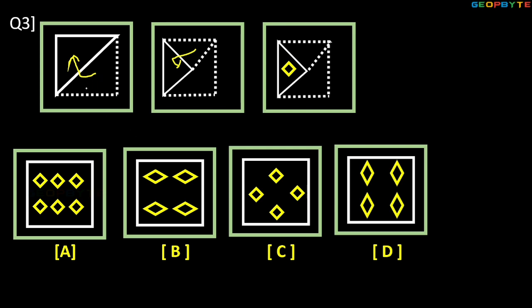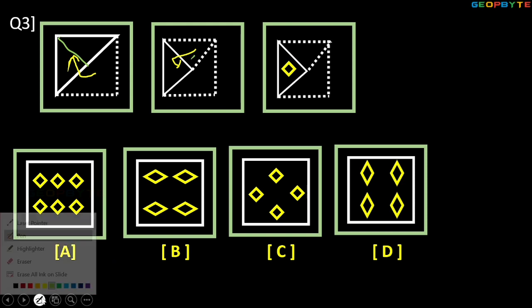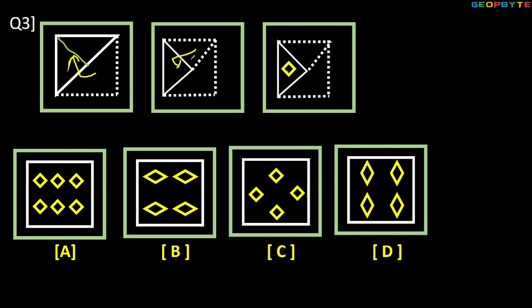Question number 3: diagonally it is folded — first step. Again, in line symmetry wise here it is folded in the second one. Last one there is a punch — rhombus shape punch. Once it is opened, what is the last before step? This is the second step, this is the first one. Once it is opened, the diagram may be looking like here. Next, diagonally opened — diagonally opened means looking like this — 4 rhombuses.